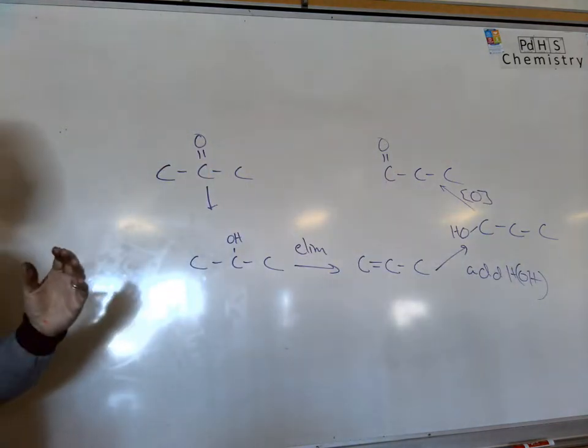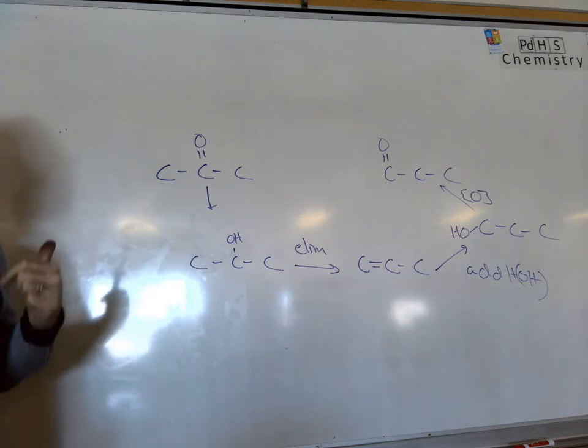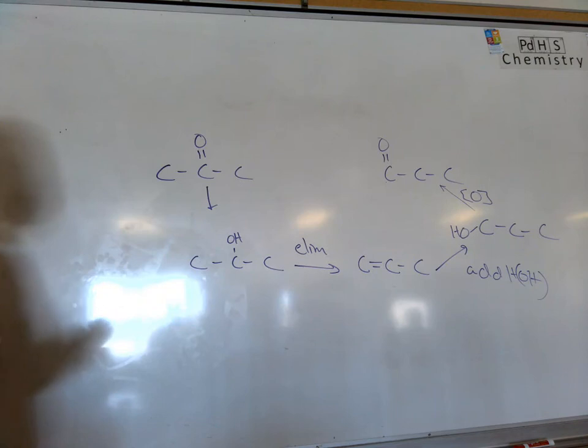If you see a C double bonded O, you're going to reduce it. If you're trying to make a C double bonded O, you need an alcohol, and you've got to oxidize it.